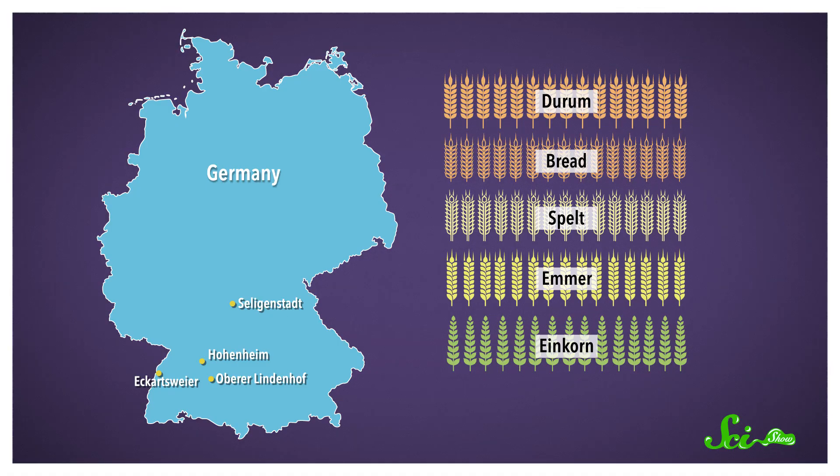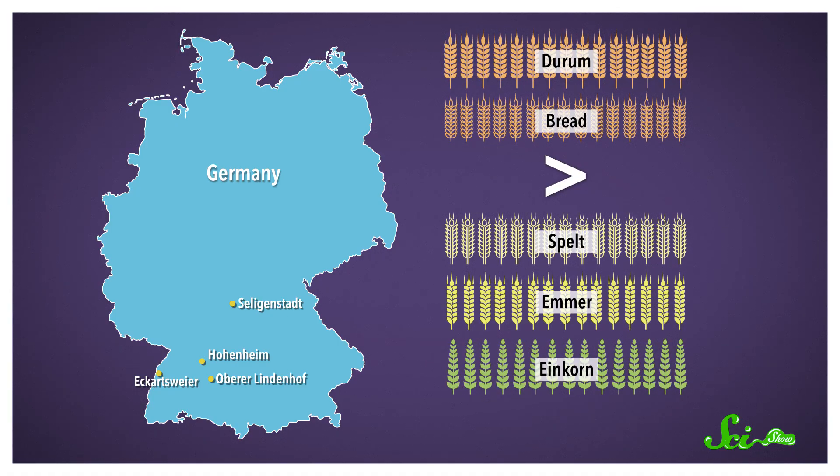Maybe unsurprisingly, the wheat varieties we use today outperformed their ancient counterparts in pretty much every way. Grain yield, or how much food we got out of each plot, was significantly higher for modern wheats. The yields for spelt, emmer, and einkorn were 37, 52, and 65 percent lower, respectively.